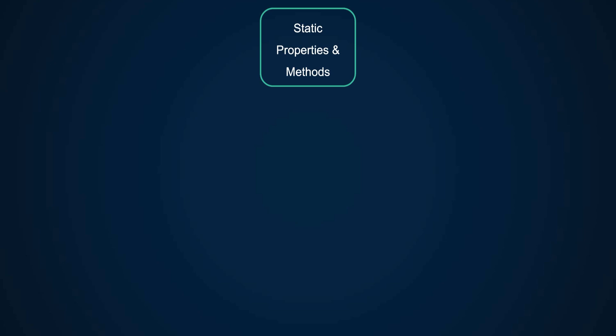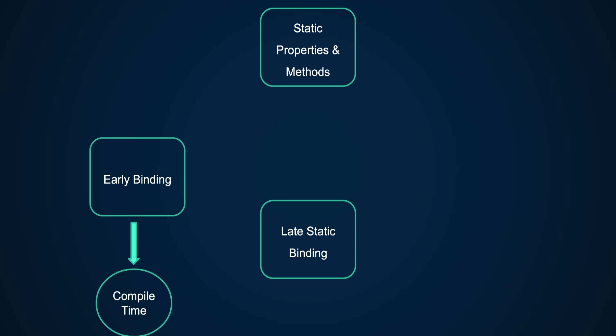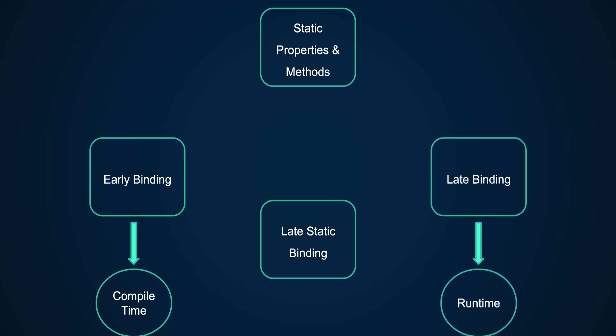We covered static properties and methods in lesson 2.7, but we haven't talked about using them with inheritance. Let's get into that. If you've heard the term 'late static binding' but it sounded confusing or didn't make sense, stick around and watch this lesson. There are two types of bindings: early binding, which happens at compile time, and late binding, which happens at runtime. PHP gets compiled on demand, and even though it is abstracted away from us, it is still there.